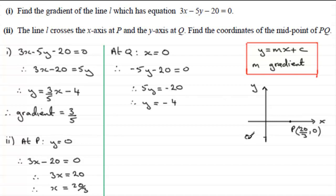So we've got our line going through the minus 4 and the P. That's the line L. Now we've got to find the coordinates of the midpoint of PQ. So we're looking then at a point here.